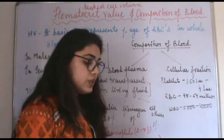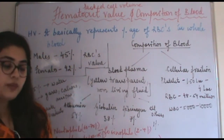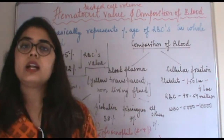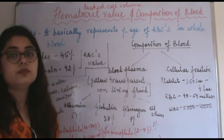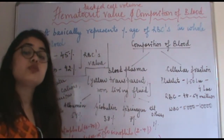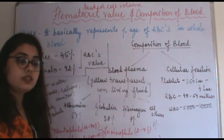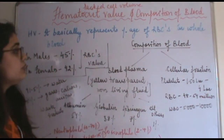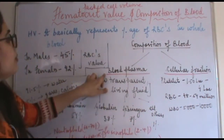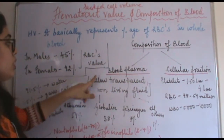Now let's move on to the composition of blood. In the previous video I talked about centrifugation, which produces three layers: the plasma on top, the buffy coat in the middle containing WBCs and platelets, and the bottom layer where the RBCs are packed together. The topmost layer — the yellow transparent plasma — is used for sample testing.